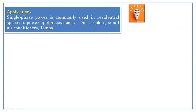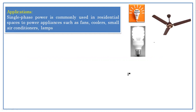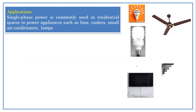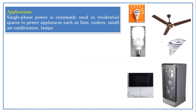Looking at the applications, single phase power is commonly used in residential spaces to power appliances such as fans, coolers, small air conditioners, and lamps. We use LED lights, fans, TVs, fridges, and rice cookers — these are all single phase AC applications. These are all small power applications for which we use single phase.